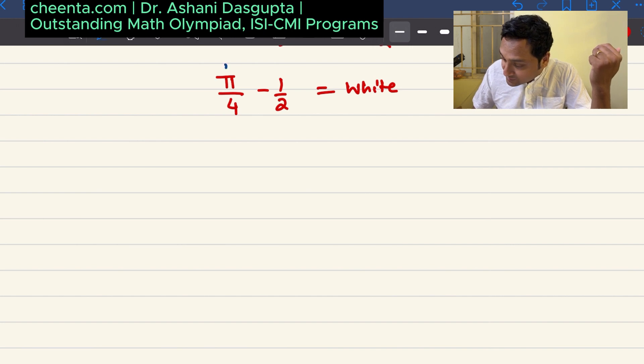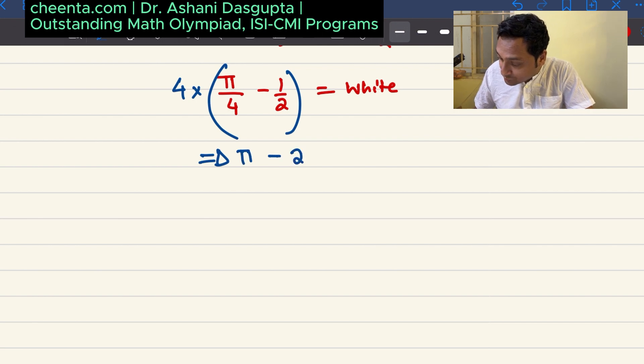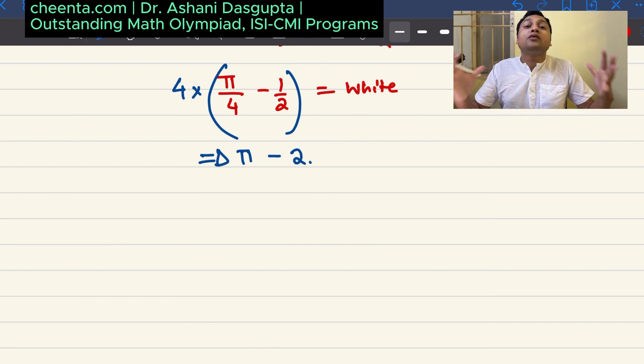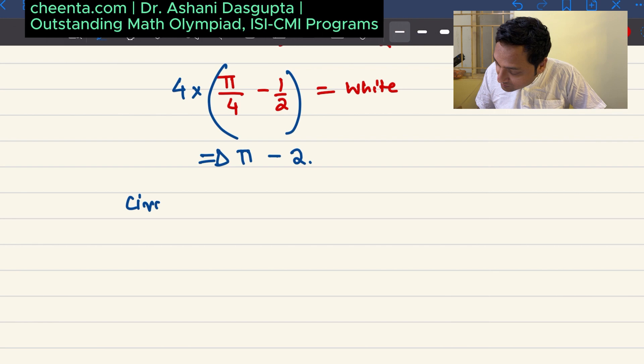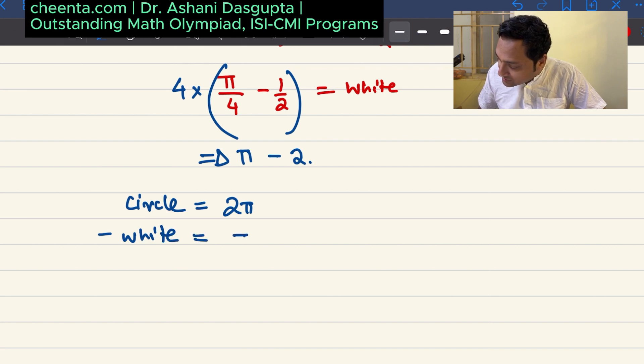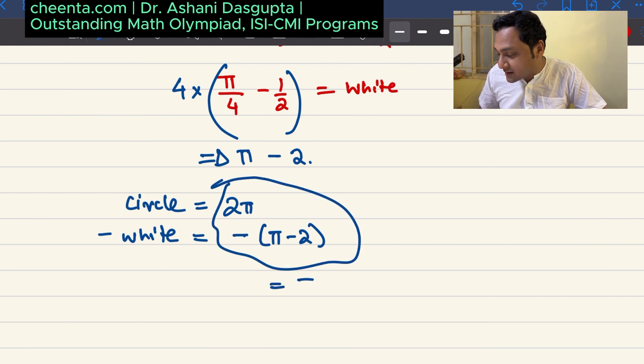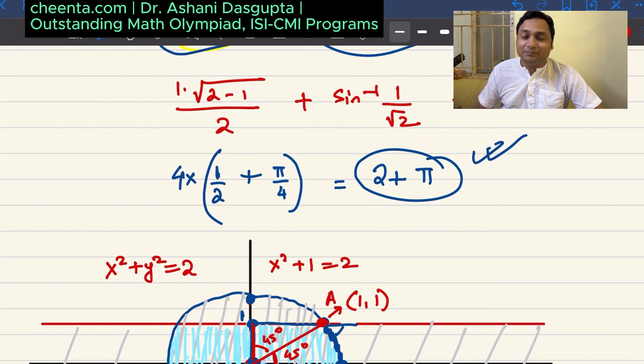It's 4 times, which is pi minus 2. That's the total white region. If you delete the total white region from the entire circle's area, you will get the area of the region that you want. So the total area of the circle is 2 pi, as we saw a moment ago. From that, you delete the white region. So you delete pi minus 2. So 2 pi minus pi minus 2 is pi plus 2, exactly what we got a moment ago.